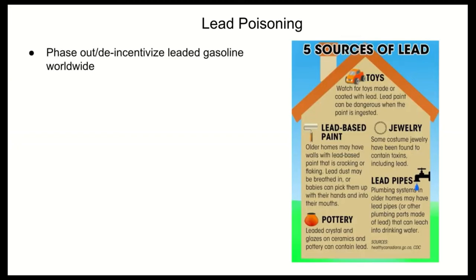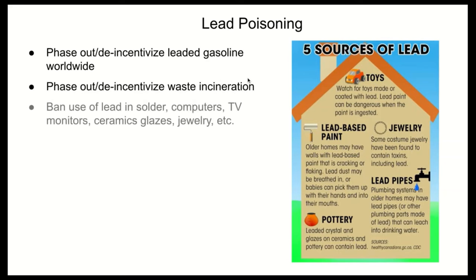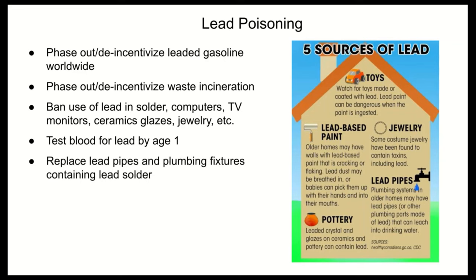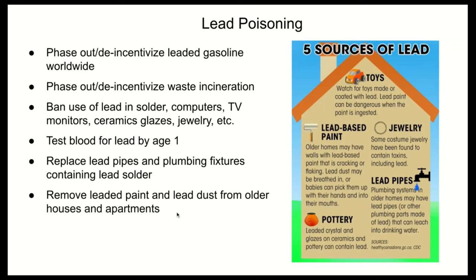To prevent lead poisoning: phase out leaded gasoline and waste incineration worldwide; ban lead in solders, electronics, ceramic glazes, and jewelry; test all children's blood for lead by age one to detect early exposure; replace lead pipes and plumbing fixtures containing lead solder; and remove leaded paint and lead dust from older houses and apartments.